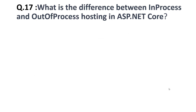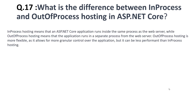The seventeenth question is: what is the difference between in-process and out-of-process hosting in ASP.NET Core? In-process hosting means that an ASP.NET Core application runs inside the same process as the web server, while out-of-process hosting means the application runs in a separate process. Out-of-process hosting is more flexible and allows for more granular control, but it can be less performant than in-process hosting.